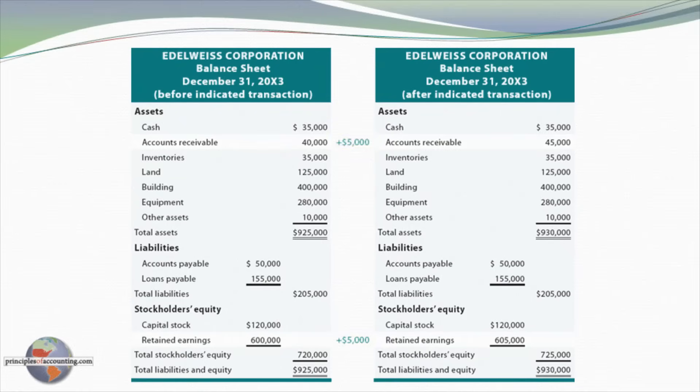now is $45,000. And retained earnings, which was $600,000, is now $605,000. The equality is again maintained. Total assets are now $930,000, as is total liabilities plus owner's equity.